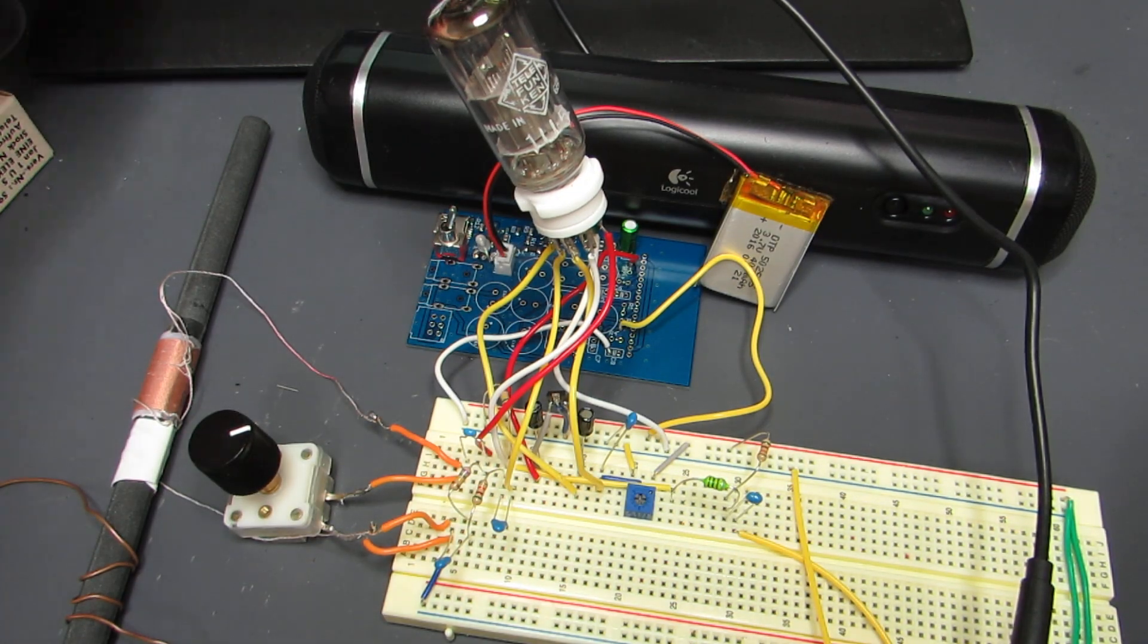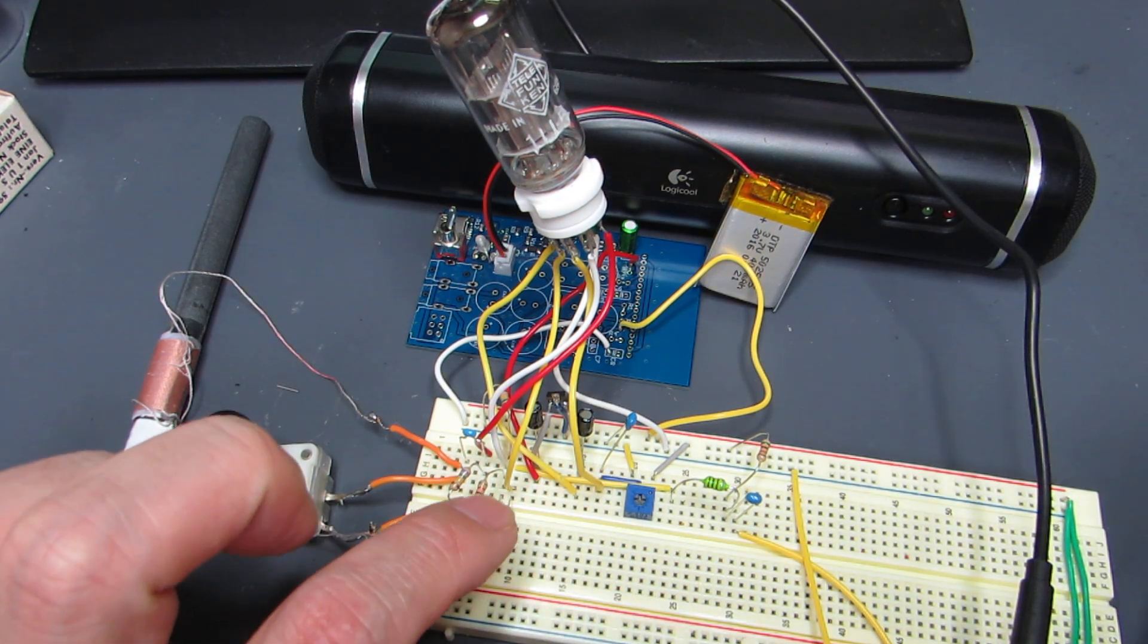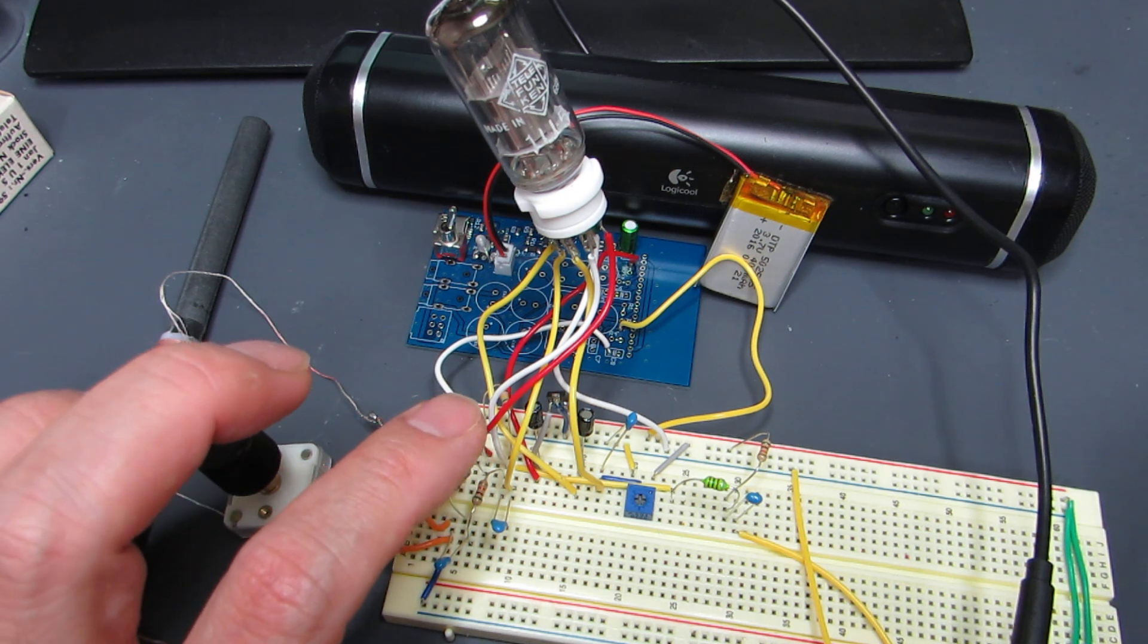So I quickly made the radio. As you can see, there is no semiconductor diode because this time I utilize the diode inside the vacuum tube.